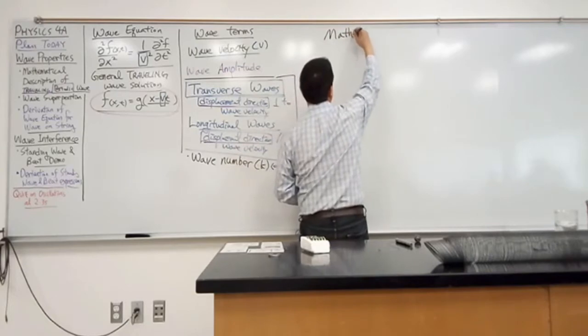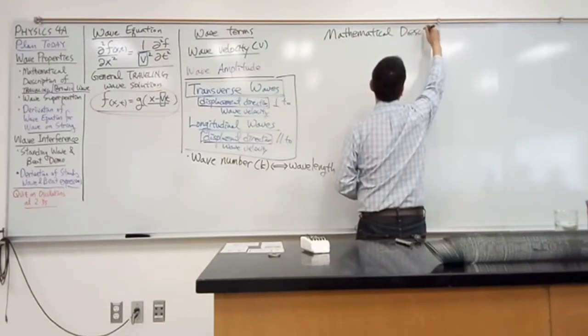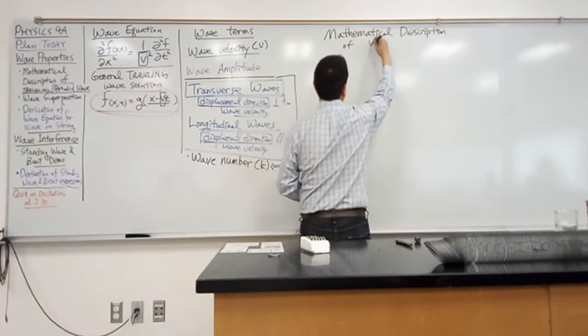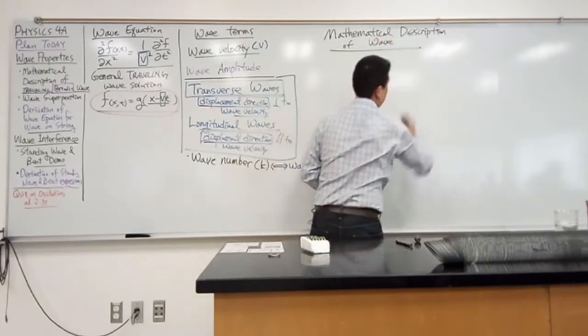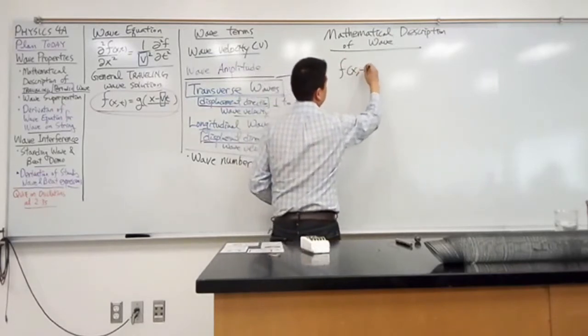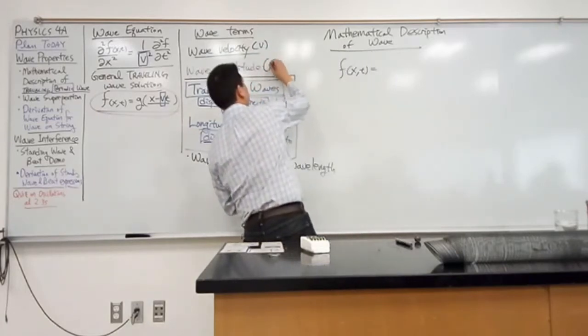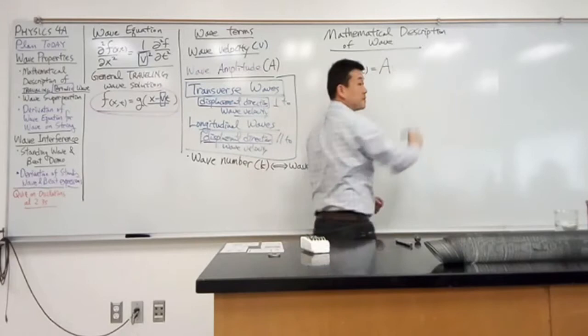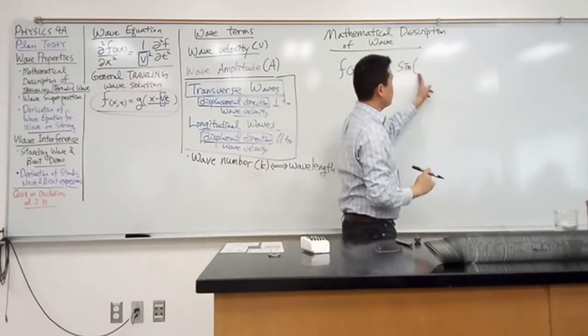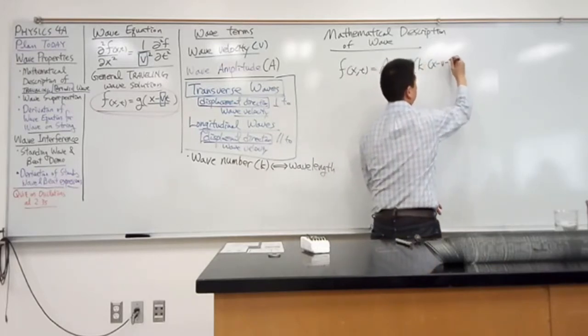We can describe something that looks like this. Function f as a function of position and time is equal to amplitude, let me use my standard symbol, amplitude times the functional form, sine, and the argument to this has this constant k times x minus vt.